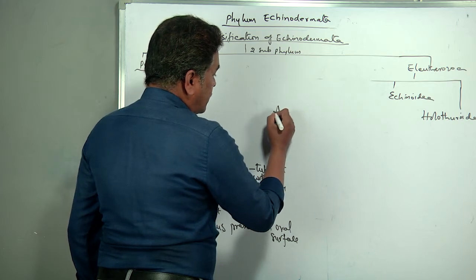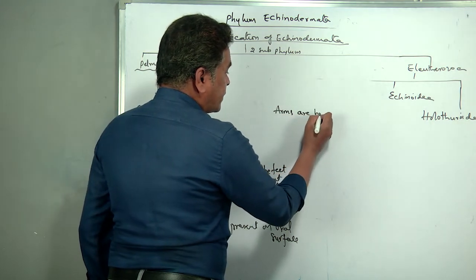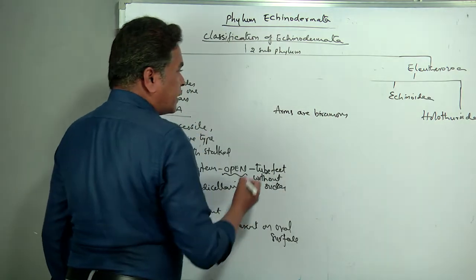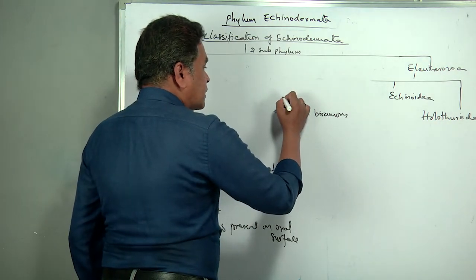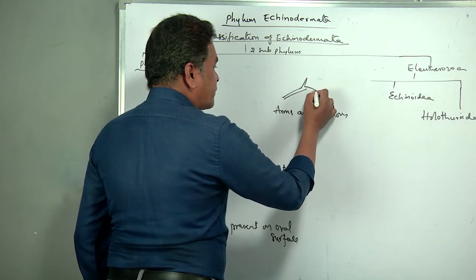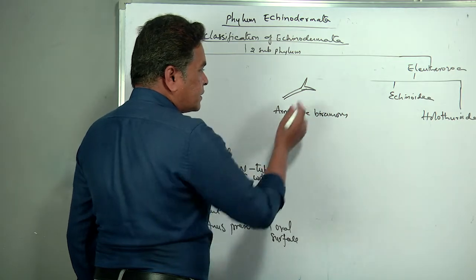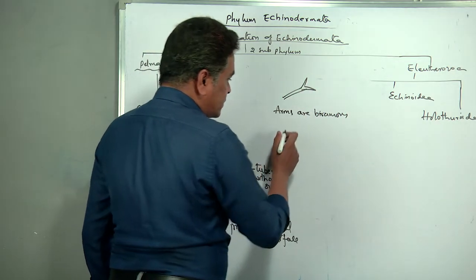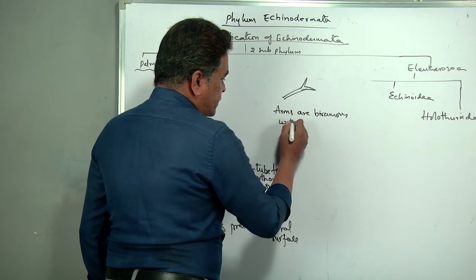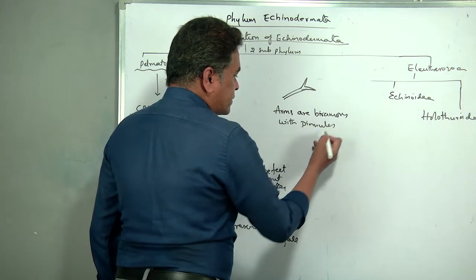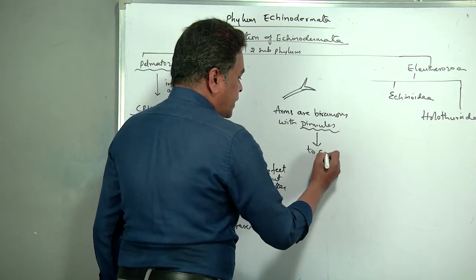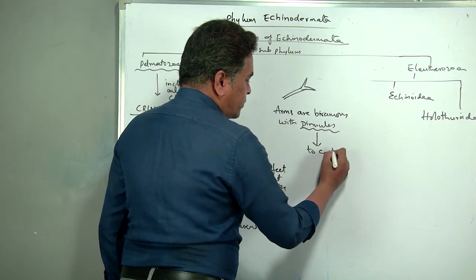Arms in Crinoidea are biramous — when the arm bifurcates it is called biramous. Arms are biramous with pinules. The function of pinules is to capture prey.